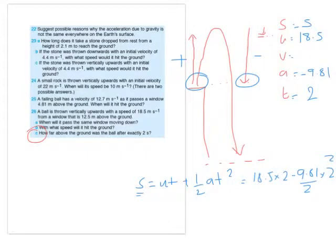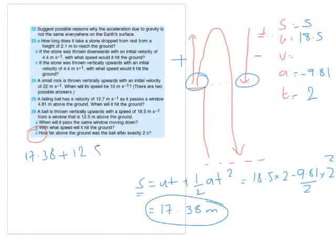So by substituting all of those values in, we will get a value of 17.38 meters. Now, that s is from the initial position, so we have 17 meters that way, but of course it wants to know how far above the ground it is. So what you need to do now is add 17.38 plus 12.5 meters, which gives you a total of approximately 29.9 meters.